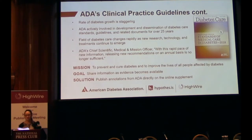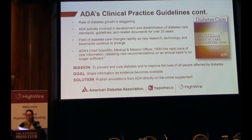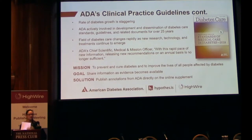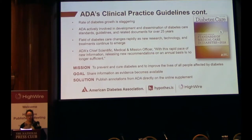ADA wanted to be able to include new information as evidence becomes available. For instance, if a new diabetes drug is approved by the FDA — which actually just happened this last winter. The 2018 Standards of Care went live on December 5th of 2017, and the FDA approved two new diabetes drugs only two weeks later. With our traditional model, we wouldn't have been able to include those new drugs in our recommendations until the next updated version, an entire year later.